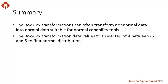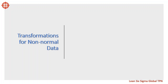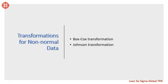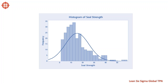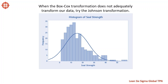So let's talk about the Johnson transformation. When we want to use normal capability tools but our data are not normal, we can transform the data to fit a normal distribution using either the Box-Cox or the Johnson transformation. The Box-Cox transformation is simple to understand but does not always work. The Johnson transformation works most of the time but is more complicated. Both attempt to transform data mathematically so the data appear normally distributed. When Box-Cox does not adequately transform our data, we can try the Johnson transformation, which selects one optimal distribution function to transform the data into normal data.